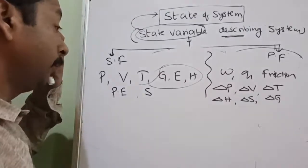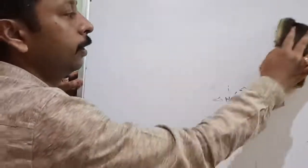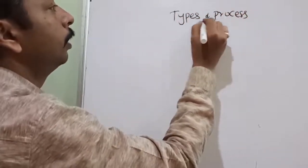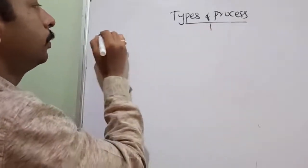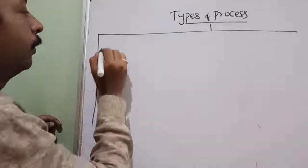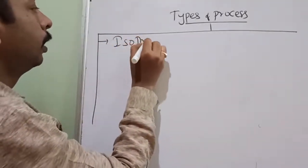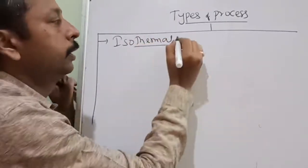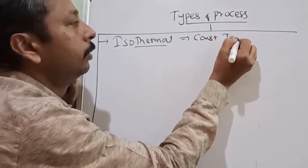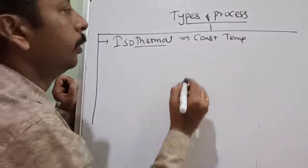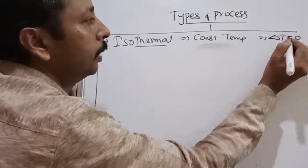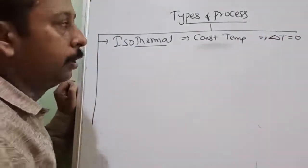Let us move further to the types of thermodynamic processes. There are many types of thermodynamic processes. The first one is isothermal — a process which is carried out at constant temperature is called isothermal. So whenever you see isothermal in a numerical, that means wherever there is delta T, you should substitute zero.